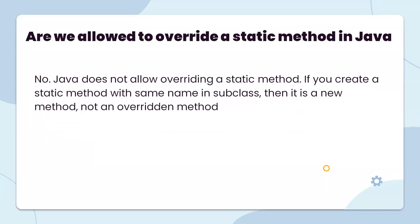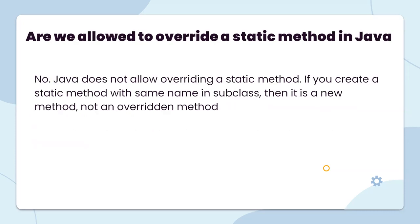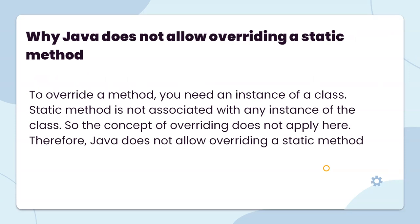Are we allowed to override a static method in Java? Java does not allow overriding a static method. If you create a static method with the same name in a subclass, it is a new method, not overriding. Why does Java not allow overriding a static method? To override a method, you need an instance of a class. The static method is not associated with any instance of that class, so the concept of overriding does not apply here. Therefore, Java does not allow overriding a static method.